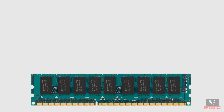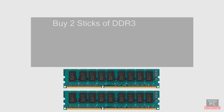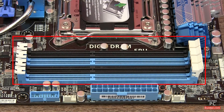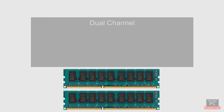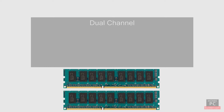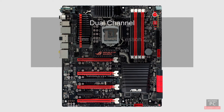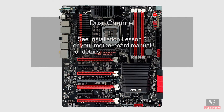When you buy RAM for your new computer, we recommend you get two sticks of DDR3 memory, at least 4GB in size, with the same specifications, for a total of 8GB. Since most motherboards have four available slots to add memory, you'll have two more slots available for adding memory in the future. The reason for using two sticks of memory is so that you can enable dual-channel on the motherboard. Dual-channel combines the two sticks of memory to double their bandwidth and increase the speed at which the RAM is accessed. Dual-channel support is standard on just about every motherboard made today. The motherboard will detect the matched set of RAM sticks and enable dual-channel automatically. See Installation Lesson 2, or your motherboard manual, to make sure dual-channel is enabled.